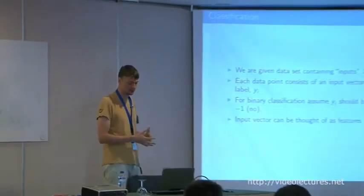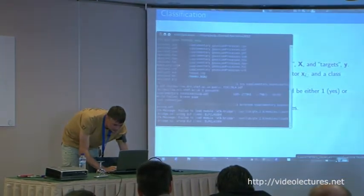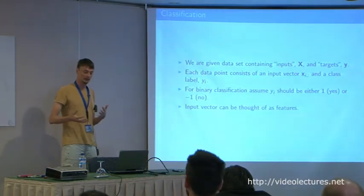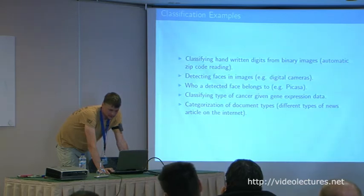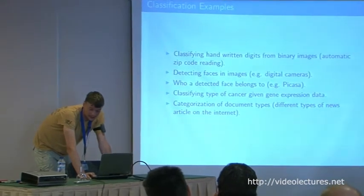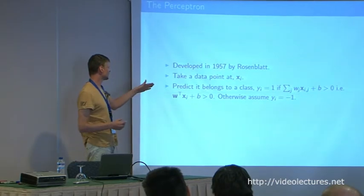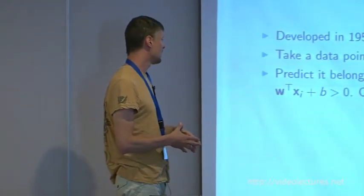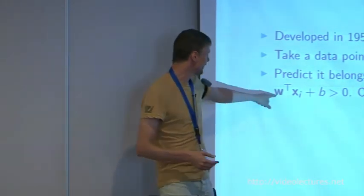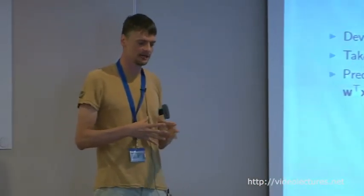The classic thing we do in machine learning is inputs and targets. We've got a set of inputs and we want to predict a target. For binary classification, the target should be either +1 or -1 — examples include document categorization, face detection, digit classification. The perceptron is really the foundation of machine learning: you take a data point Xi and predict it belongs to class Yi if the inner product of the weights and the input plus a bias is greater than zero. Rosenblatt proposed this in 1957.